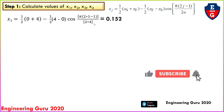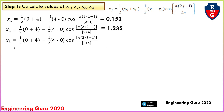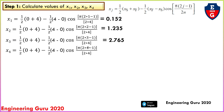For j = 2, find x2 — the formula remains the same but j changes to 2 — giving x2 equal to 1.235. For j = 3, x3 equal to 2.765. For j = 4, x4 equal to 3.848. This completes Step 1.